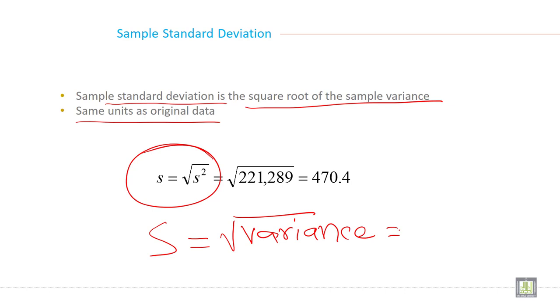And when you solve the previous example, your variance will be this. When you find the under root, you will get 470.4. So this is the procedure and method to calculate sample variance and standard deviation.